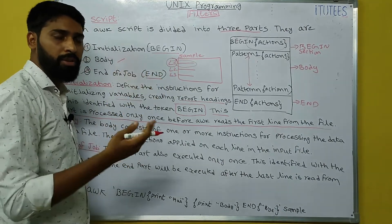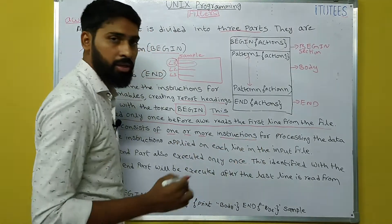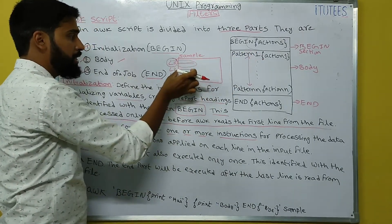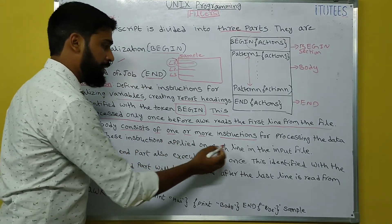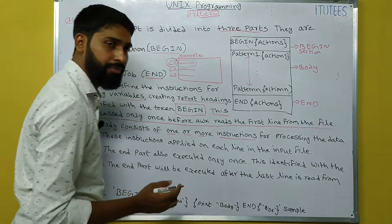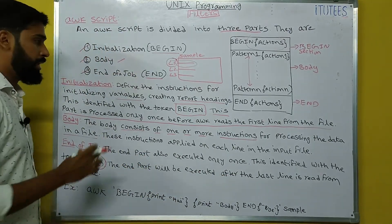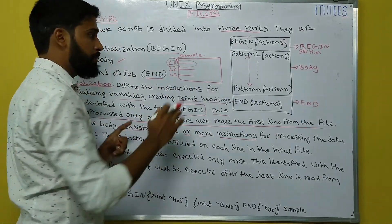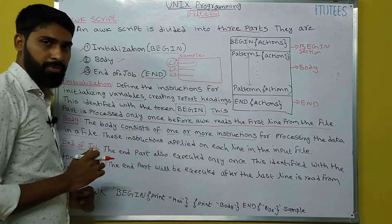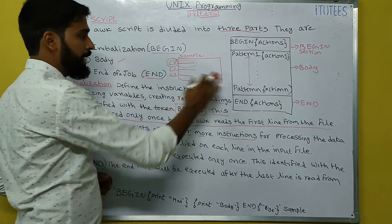The body part consists of one or more instructions for processing the data in a file. You can write any number of actions, and all these actions are applied on each line in the input file. The END part is also executed only once, identified with the token END. The END part will be executed after the last line is read from the input file. So BEGIN executes before reading the first line, and END executes after reading the last line.